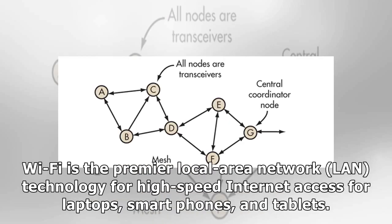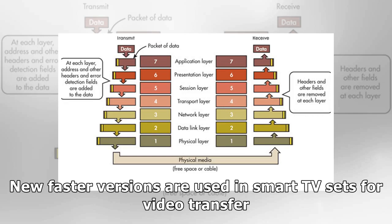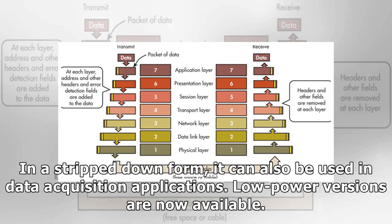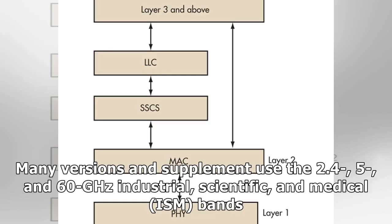Wi-Fi is the premier local area network technology for high-speed internet access for laptops, smartphones, and tablets. Newer, faster versions are used in smart TV sets for video transfer. In a stripped-down form, it can also be used in data acquisition applications, and low-power versions are now available.